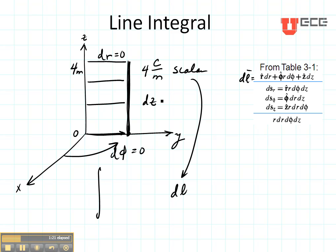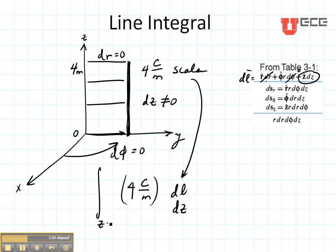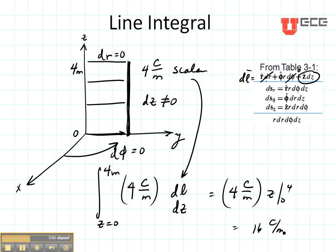Does Z change? Yes — over the length of this line, dZ is not equal to zero. Since dR and dφ are both zero, DL equals dZ. So I integrate four coulombs per meter with respect to Z from zero to four meters, giving me four times Z from zero to four, which equals 16 coulombs — just as it did before.